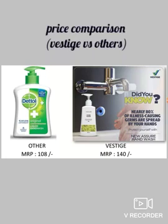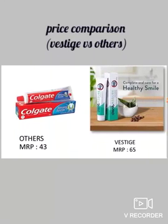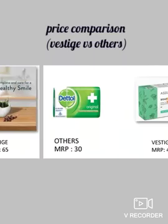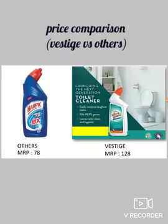Starting with the product, the hardwash. We have 108 rupees. We have 140 rupees. We have 4 brushes, 120 rupees. We have 276 rupees. We have 43 rupees. We have 65 rupees. We have 30 rupees. We have 40 rupees. We have 78 rupees and 128 rupees.